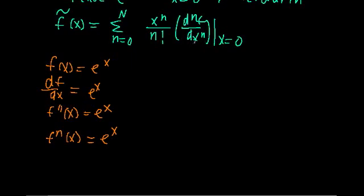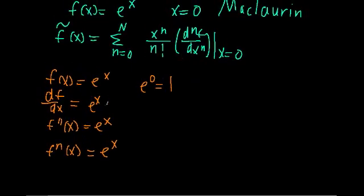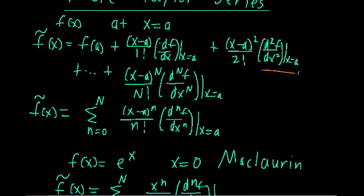Now that we've figured out what the derivatives are, let's see what they equal when we evaluate them at x equals 0. Since all the derivatives are equal to e to the x, evaluating at x equals 0 gives e to the 0, which equals 1. So the first derivative evaluated at 0 is 1, the second derivative evaluated at 0 is also 1, and all higher derivatives evaluated at 0 are also 1. All the derivative terms are just equal to 1 for e to the x.